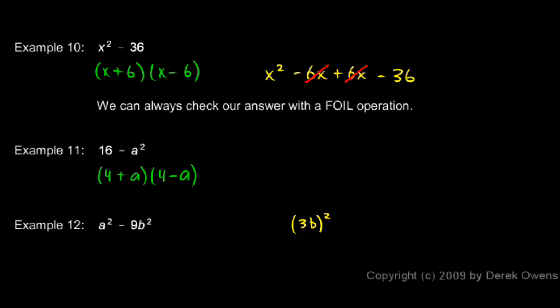We have to square both of those things in the parentheses: the 3 gets squared and the b gets squared, giving us 9b². So I have a² - (3b)². That will factor as (a + 3b)(a - 3b).